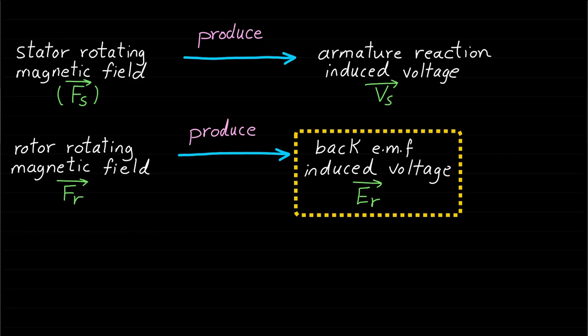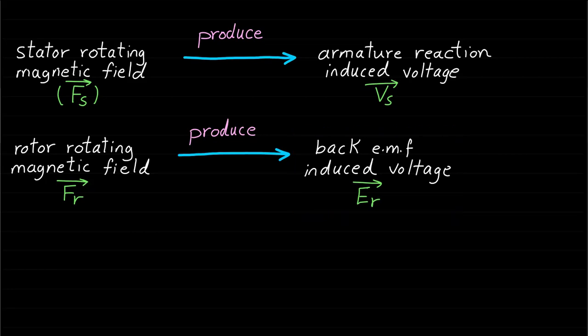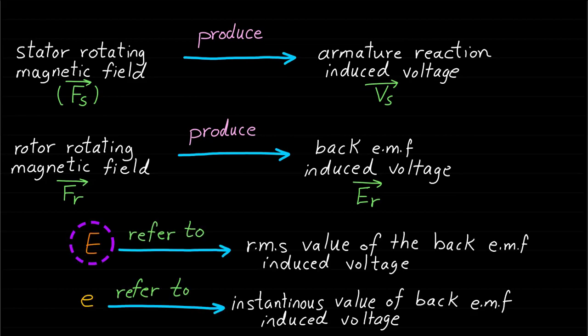In this lecture, we will focus only on the back EMF-induced voltage E_R. From now on, whenever we see capital letter E, we should know it refers to the RMS value of the back EMF-induced voltage produced by the rotor rotating magnetic field F_R. Whenever we see small letter e, it refers to the instantaneous value of the back EMF-induced voltage.